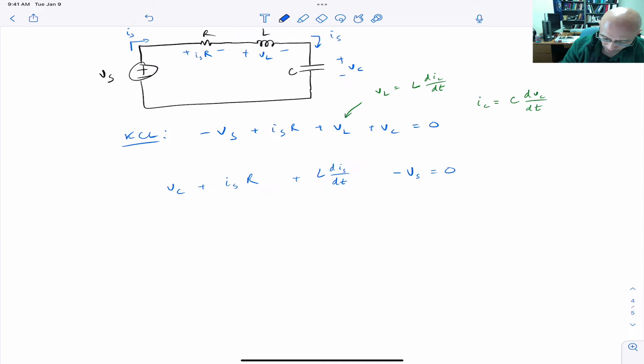So we note that the current through the inductor is IS. So instead of using IL, I'll use IS. So here's the inductor voltage. And I've just rearranged things a little bit, not too much.